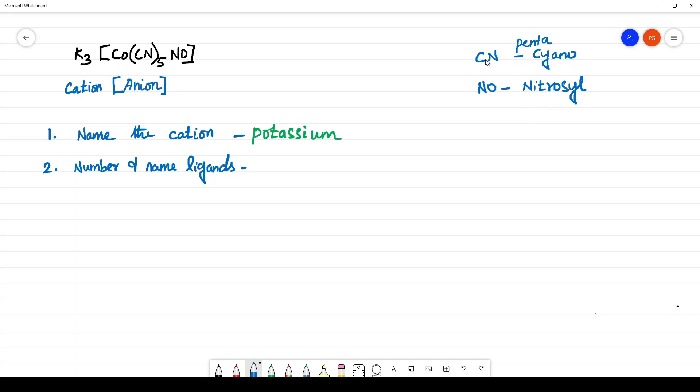Here, then how we have to arrange the ligands? See, you have to consider only the alphabet of ligand, not the prefix. That is whatever the suffix you should not consider. You should consider only the alphabet of the ligand. So which should come first? C will be coming first and then come N.